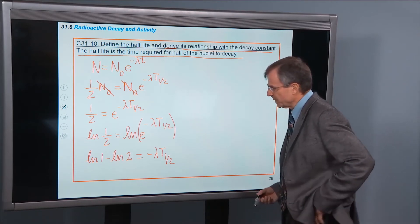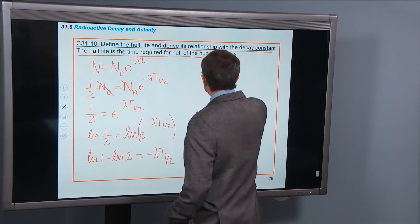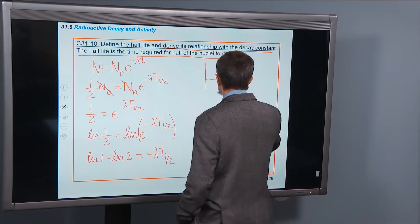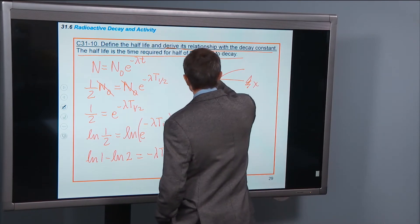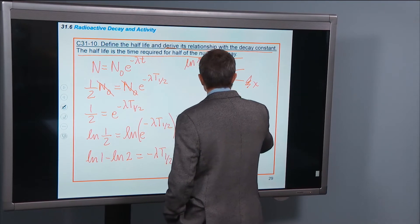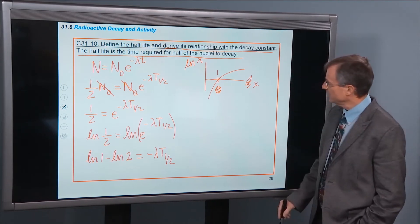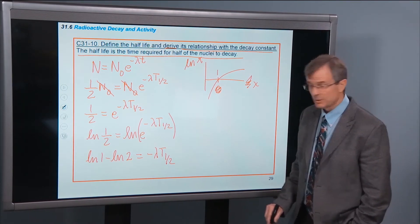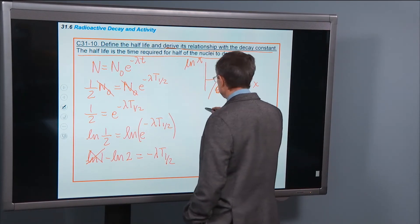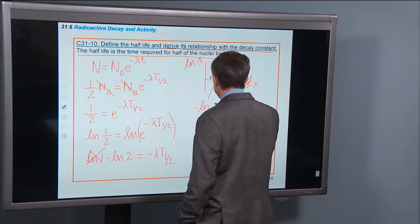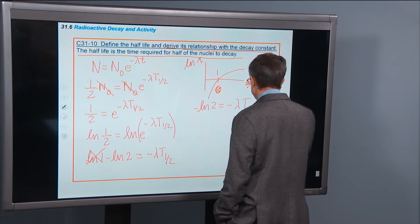All right, so we're actually pretty close because there's one more property of logarithm that we need. If you recall that the logarithm, if this is x and this is log of x, if x is 1, then the logarithm of 1 is 0. So this guy is now 0, and we have minus log of 2 equals minus lambda t 1 half. So we are almost done.